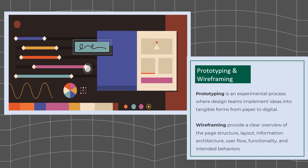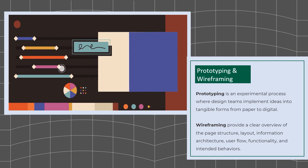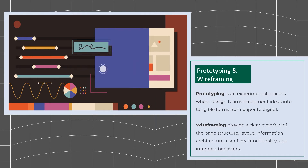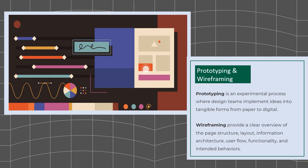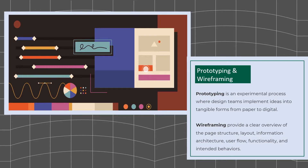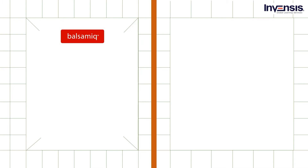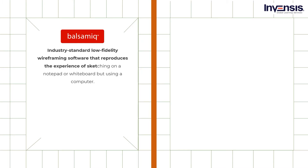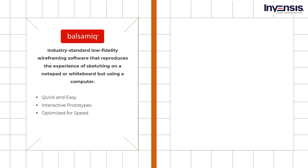Sometimes all you have is just an idea. Prototyping is an experimental process where design teams implement ideas into tangible forms from paper to digital. Then there is wireframing — a wireframe is a two-dimensional skeletal outline of a web page or app, and product owners will need prototyping and wireframing tools. Balsamic is industry-standard low-fidelity wireframing software that reproduces the experience of sketching on a notepad or whiteboard but using a computer. It is very usable, keeping things simple with the visuals. There are plenty of things to love about Balsamic wireframes, like its ease of use, easy linking between pages, and the ability to download pre-made components from a central database. Balsamic starts at $9 per month and has a free 30-day trial.